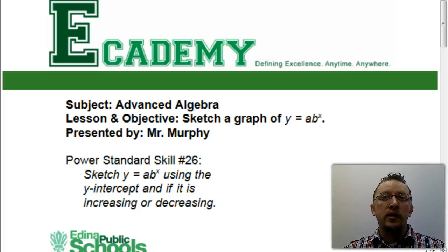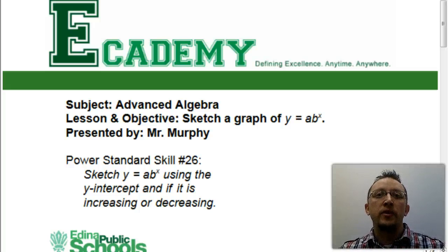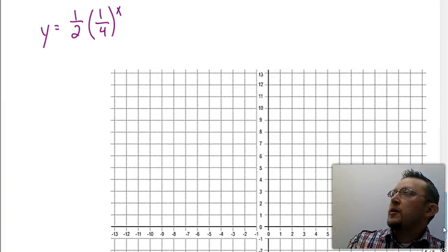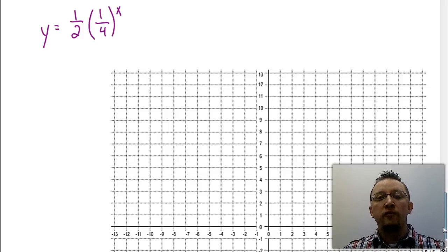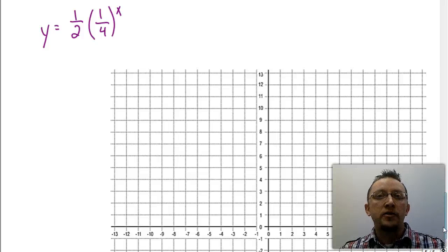One of the things that we're going to be using to help us graph these is the y-intercept. Let's take a second to look at what kind of graphs we're going to be doing before we talk about some of the things that we need to know. This is an example of an exponential function that you'll be doing on your own: y equals one-half times one-fourth to the x power.